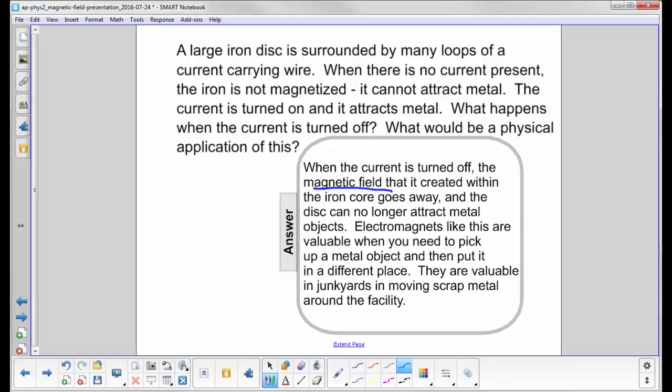Electromagnets, that's what you call these. Electromagnets like this are valuable when you need to pick up a metal object or a whole bunch of metal scrap and then put it in a different place. They are valuable in junkyards in moving scrap metal around the facility.